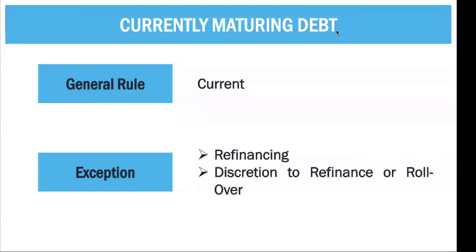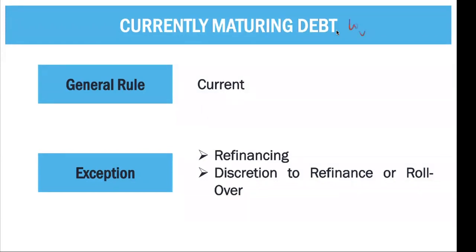Now, currently maturing debt — this means it is a long-term debt that is now maturing. For example, it is a five-year liability, so it must be due after five years, but it is now in the fifth year. As a rule, currently maturing long-term debt should be classified as current liability. For example, a five-year loan obtained January 1, 2015 is due January 1, 2020. With a balance sheet date of March 31, 2019, that is only nine months away — less than 12 months — so it is considered currently maturing and treated as current.